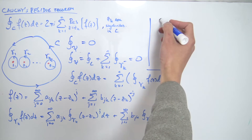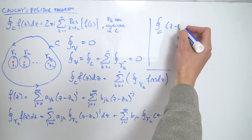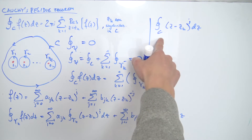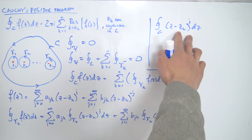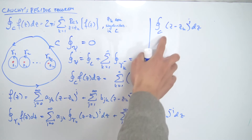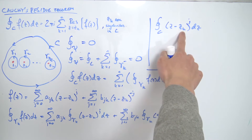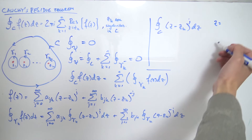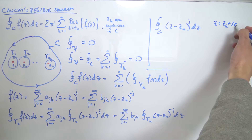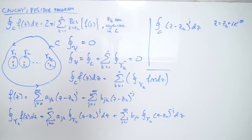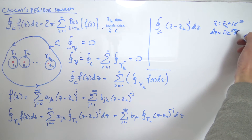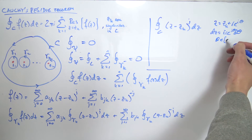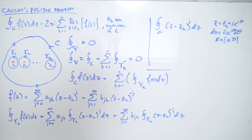The lemma: the contour integral over a closed circular path C around Z sub K of (Z minus Z_K)^J equals zero, except when J equals negative one. To prove this, let C be a circle centered at Z sub K. We parameterize it as Z equals Z_K plus R·e^{iθ}, which gives a circle of radius R around Z sub K. Differentiating both sides, dZ equals i·R·e^{iθ} dθ, and θ ranges from zero to 2π to make a complete circle.